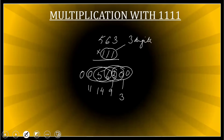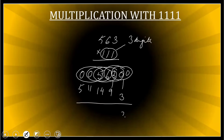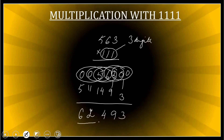Next group: six, five, zero — six plus five is eleven, plus zero is eleven — so 11. Last group: five, zero, zero — which equals 5. My results are: 3, 9, 14, 11, 5. Taking 4 from 14 and carrying 1 forward: eleven plus one is twelve — so 2 with 1 carried forward; five plus one is six. Reading the answer: 62,493. That is 563 multiplied by 111.